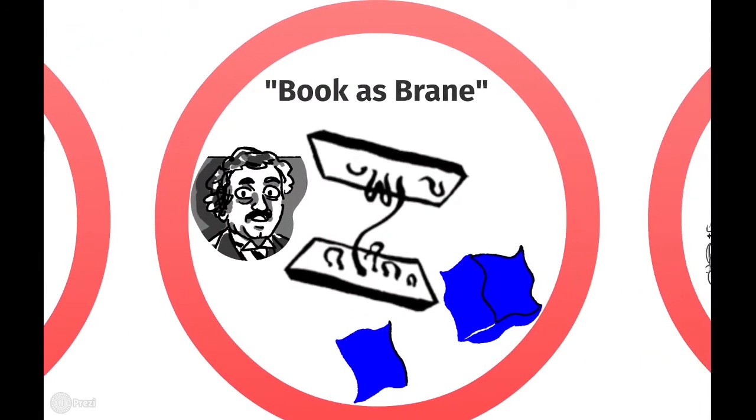In book as Brain, B-R-A-N-E, I look into comics as a multiples medium, given the printing process, and apply it to modern string theory, hence Albert Einstein in the corner there. I then use string theory to examine Marvel and DC comics and their use of multiple universes, which begs the question if multiple universe theory is baked into the medium of comics itself by its very design.